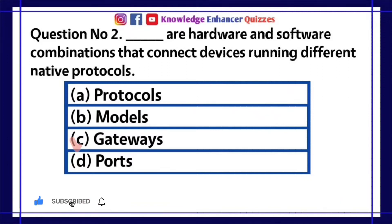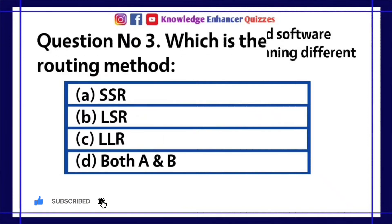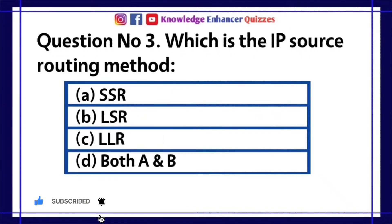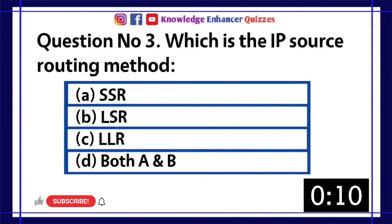Option C is the right answer. Question number 3: Which is the IP source routing method? A. SSR. B. LSR. C. LLR. D. Both A and B.